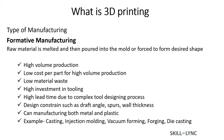It has certain design concerns such as draft angles, spurs, and wall thickness. You cannot go to really thin walls for most processes. You have the option of vacuum forming, but that just makes your process more expensive and more complex. Examples are casting, injection molding, and vacuum forming.